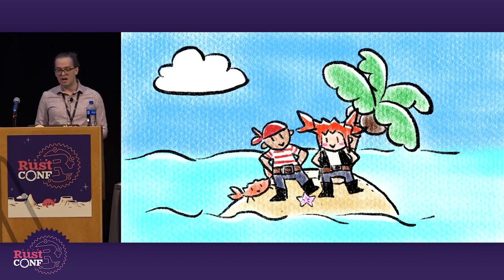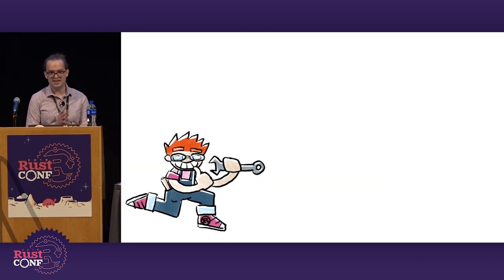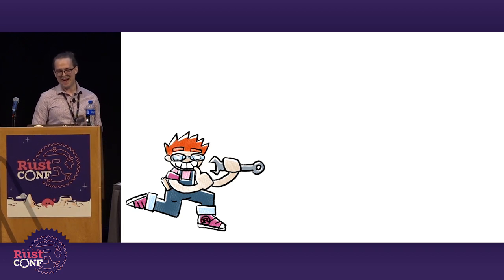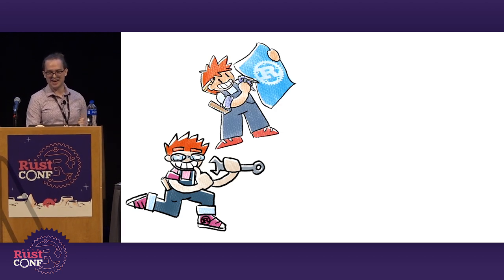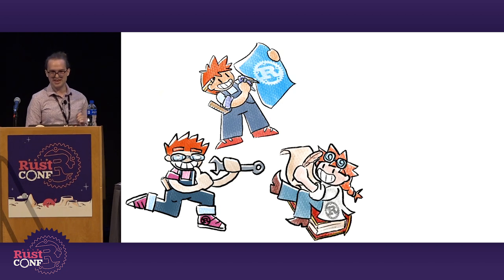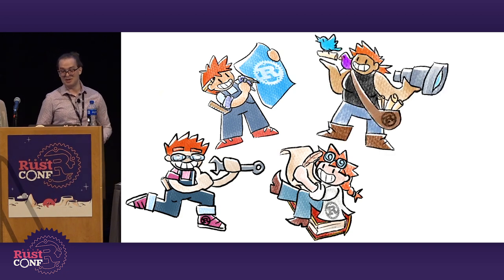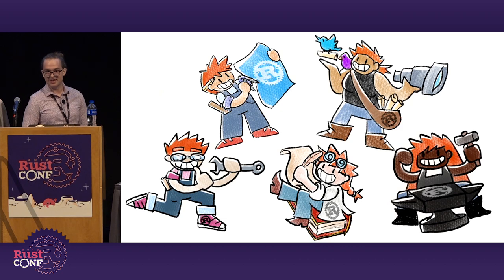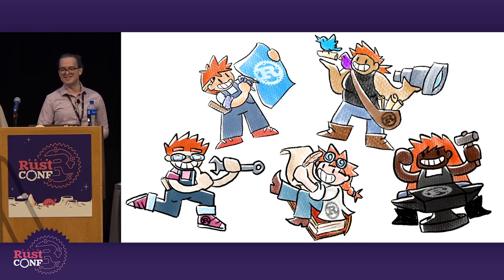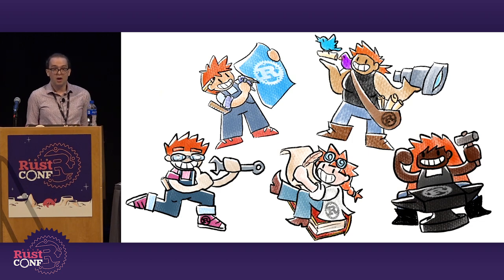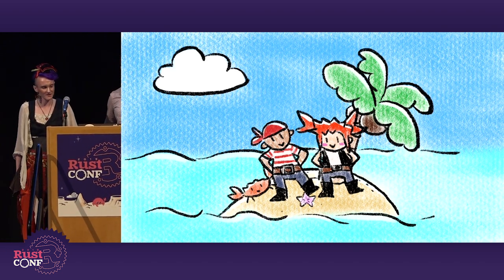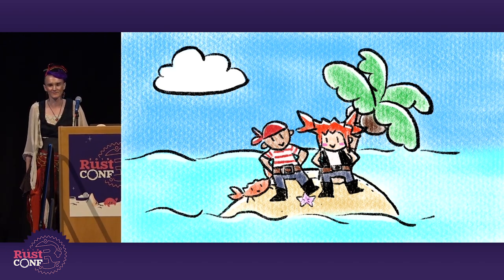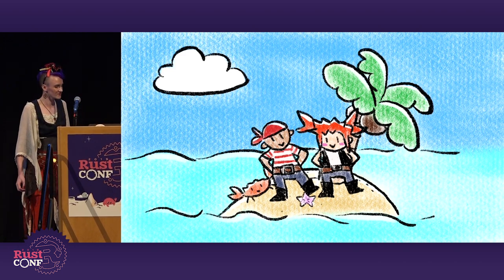There are many islands on the Rust Sea, and there are also many peoples. There's the industrious Compilarians, keepers of the vast machines of the main islands. The resourceful Langians, painstaking designers of those machines. The studious Dachshund, authors of great tomes of knowledge. The gregarious Communitarians, always looking out for newcomers to the islands. The craftsy Toolcrafters, creators of machines used by both the islanders and people all over the world, and many more. I want to be more than just the Rust language mascot — I want to be a contributor too. How can I get started?